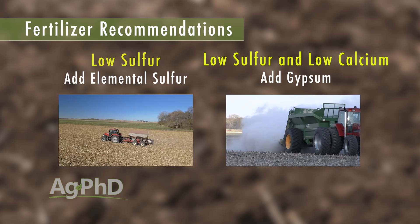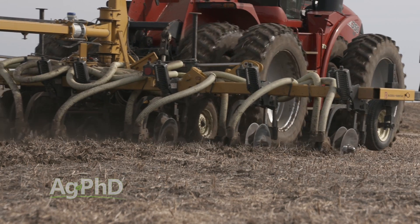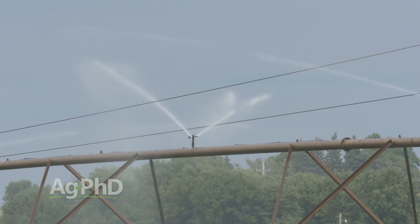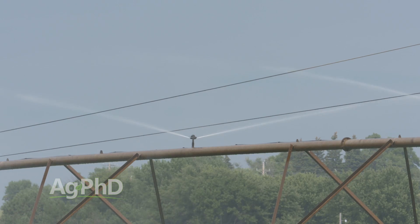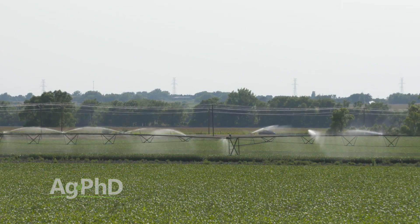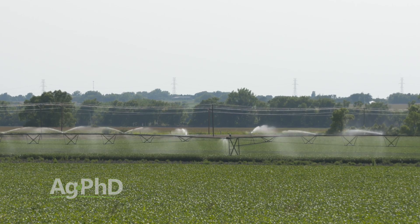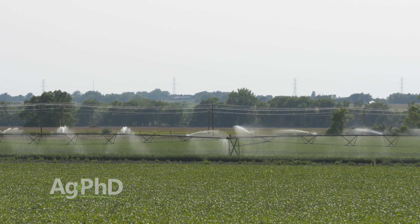If you have low sulfur, add elemental sulfur. If you have low sulfur and low calcium, use gypsum. Now here's one thing NOT to do: if you're contributing to the sodium problem, stop. If you're over-applying manure or using poor quality water for irrigation, you've got to stop that right now. A little bit of sodium can become a lot when you think of the thousands of gallons of irrigation water going on that field every year.